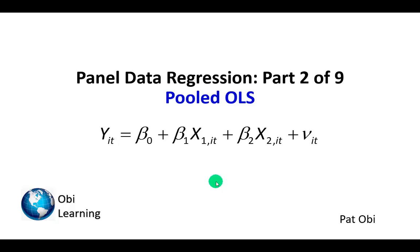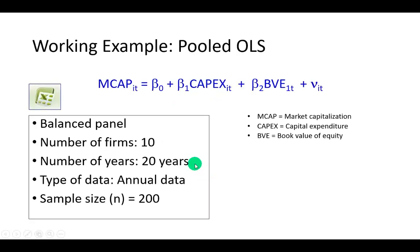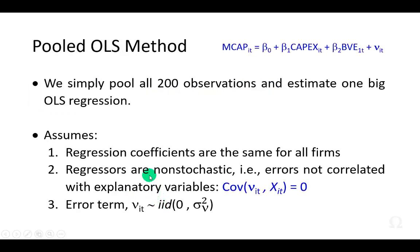In part two of this video series on panel data regression, I'm going to show how to estimate pooled OLS. We're going to do this using a panel data set consisting of a balanced panel of 10 firms, each with 20 years of annual data, for a total of 200 observations. We'll pool all 200 observations and estimate one big OLS regression examining how market capitalization relates to capital expenditure and book value of equity of these 10 firms.